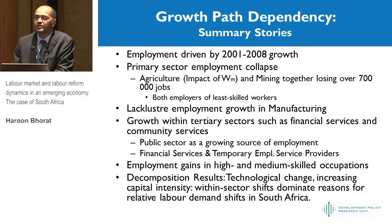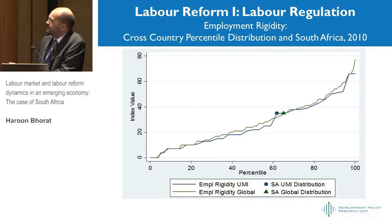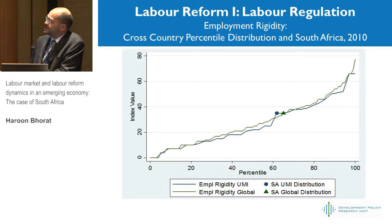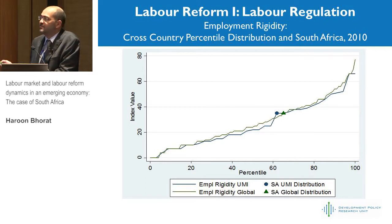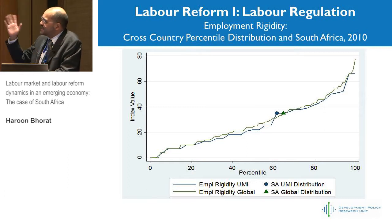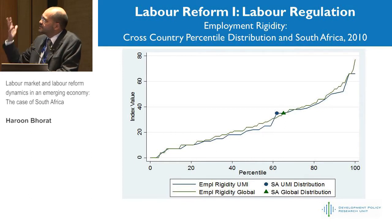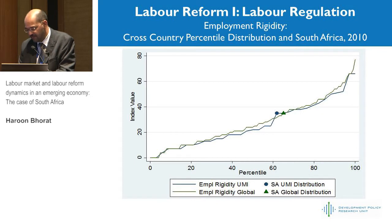Turning to the labour reform story, using the World Bank Doing Business survey and looking at Employment Protection Legislation (EPL) measures across a global distribution, South Africa's labour regulatory regime — for an unemployment rate of 25% — is not particularly high, sitting at around the 62nd to 65th percentile of upper-middle-income countries. For a 25% unemployment rate, I'd expect us to be much higher. So there's either something wrong in our interpretation of the ranking, or it points to the limitations of the Doing Business survey rankings.